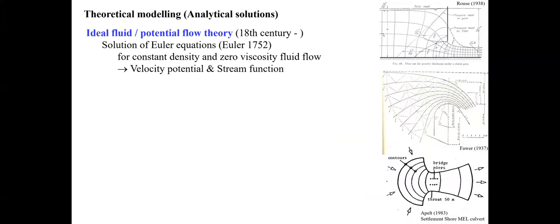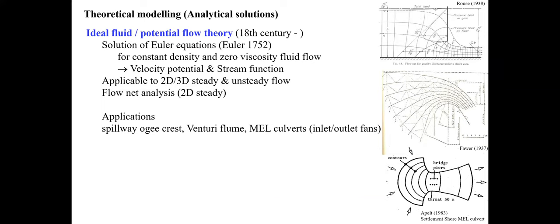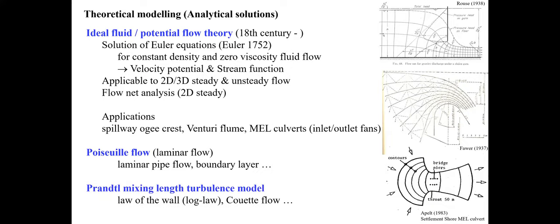The second form of hydraulic modeling is theoretical, or analytical, modeling. One approach, well known during the 18th and 19th centuries, is ideal fluid flow theory, or potential flow theory — applied, for example, to sluice gates, spillway crests, and even the inlet and outlet of Minimum Energy Loss culverts. Another form is Poiseuille flow, the analytical solution of the Navier-Stokes equation for laminar flow. We may also use simple Prandtl mixing-length turbulence models to derive analytical models of turbulent flow.